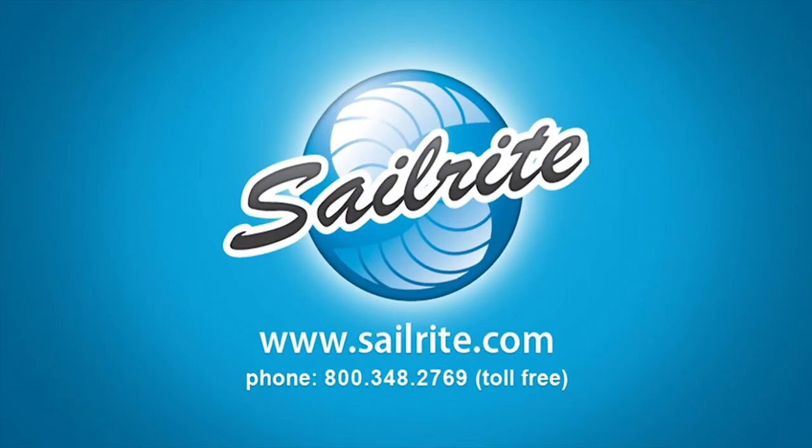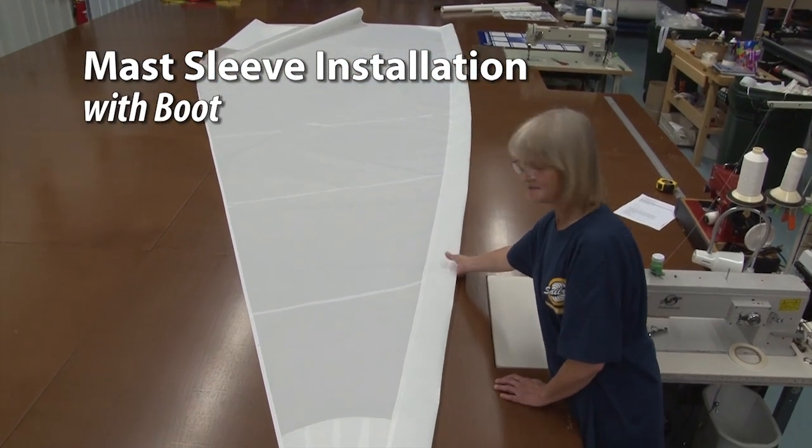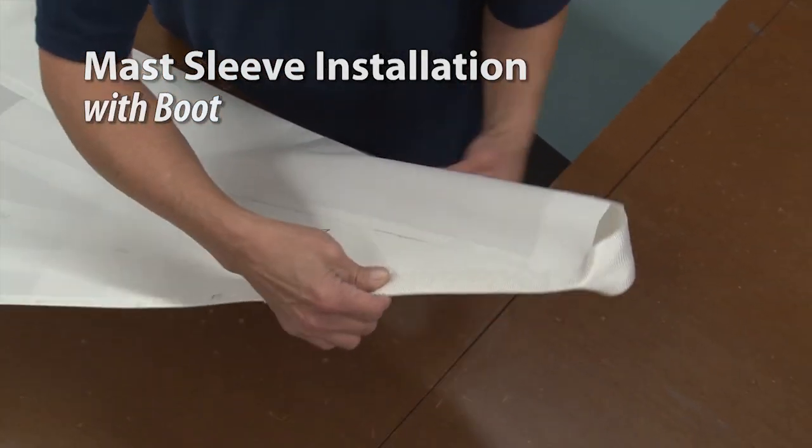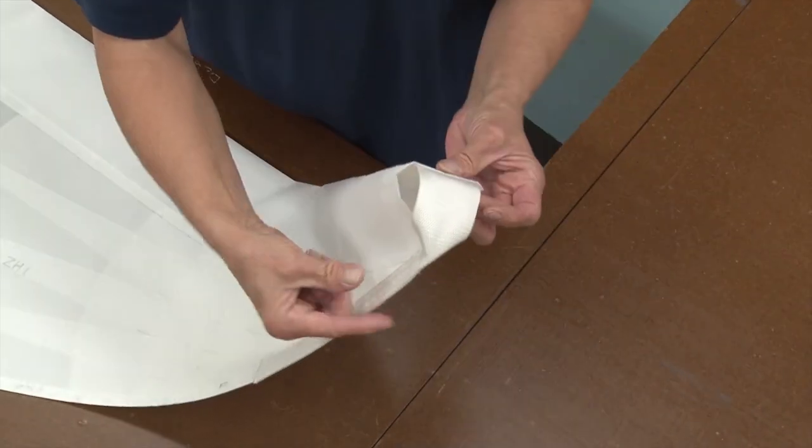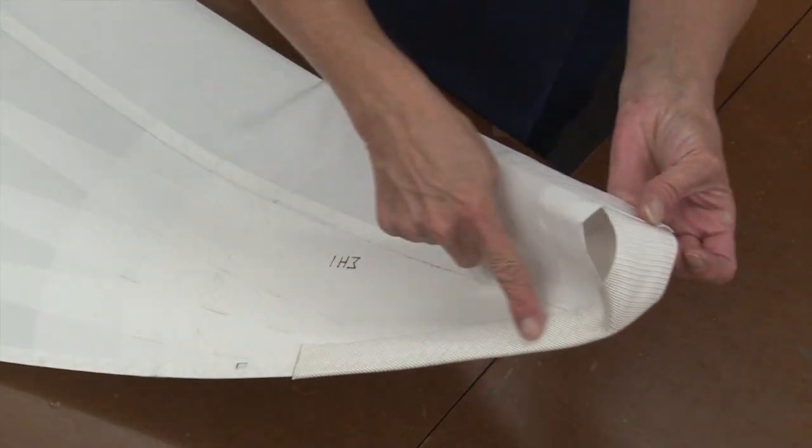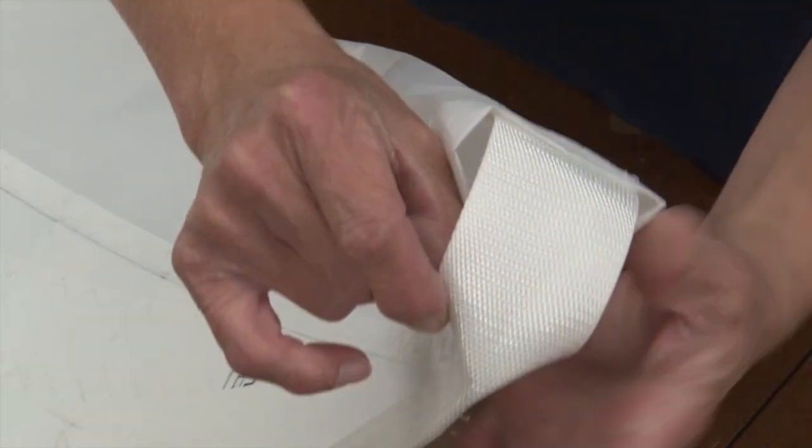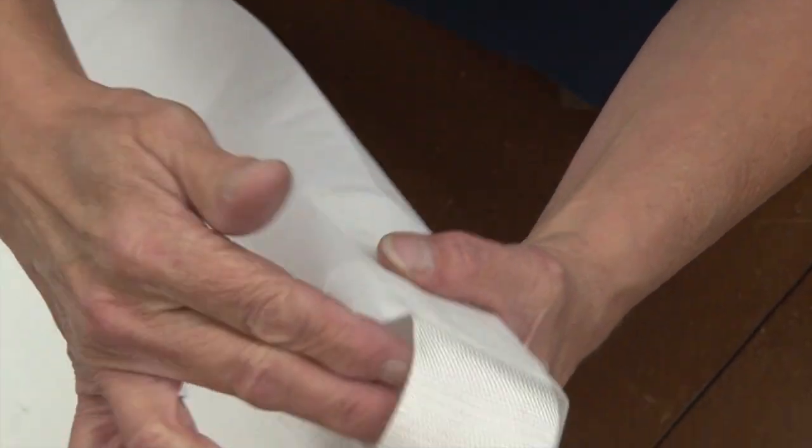This video is brought to you by Sailrite. In this video we're going to be making a mast sleeve installation. This mast sleeve will also include a boot and it's often used in lasers and Force 5 sails and other similar applications where your mast needs to run up a sleeve.